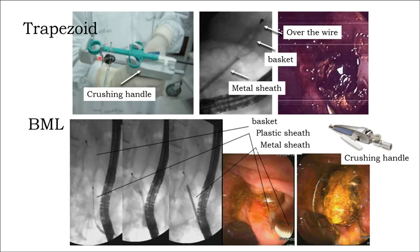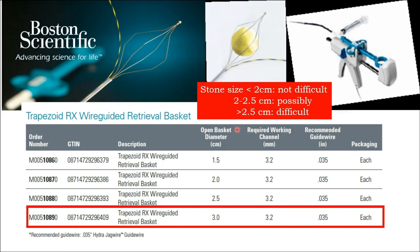The Trapezoid lithotripter has a cutting handle same as indicated for sphincter dilation, and the metal sheet is designed all-wire. The BML model has a basket plastic sheet and metal sheet with a cutting handle. Trapezoid basket diameter is 1.5 to 3 cm; TSM is commonly used. Stone less than 2 cm is not difficult to clasp and cut; 2 to 2.5 cm is possible, but more than 2.5 cm is more difficult.